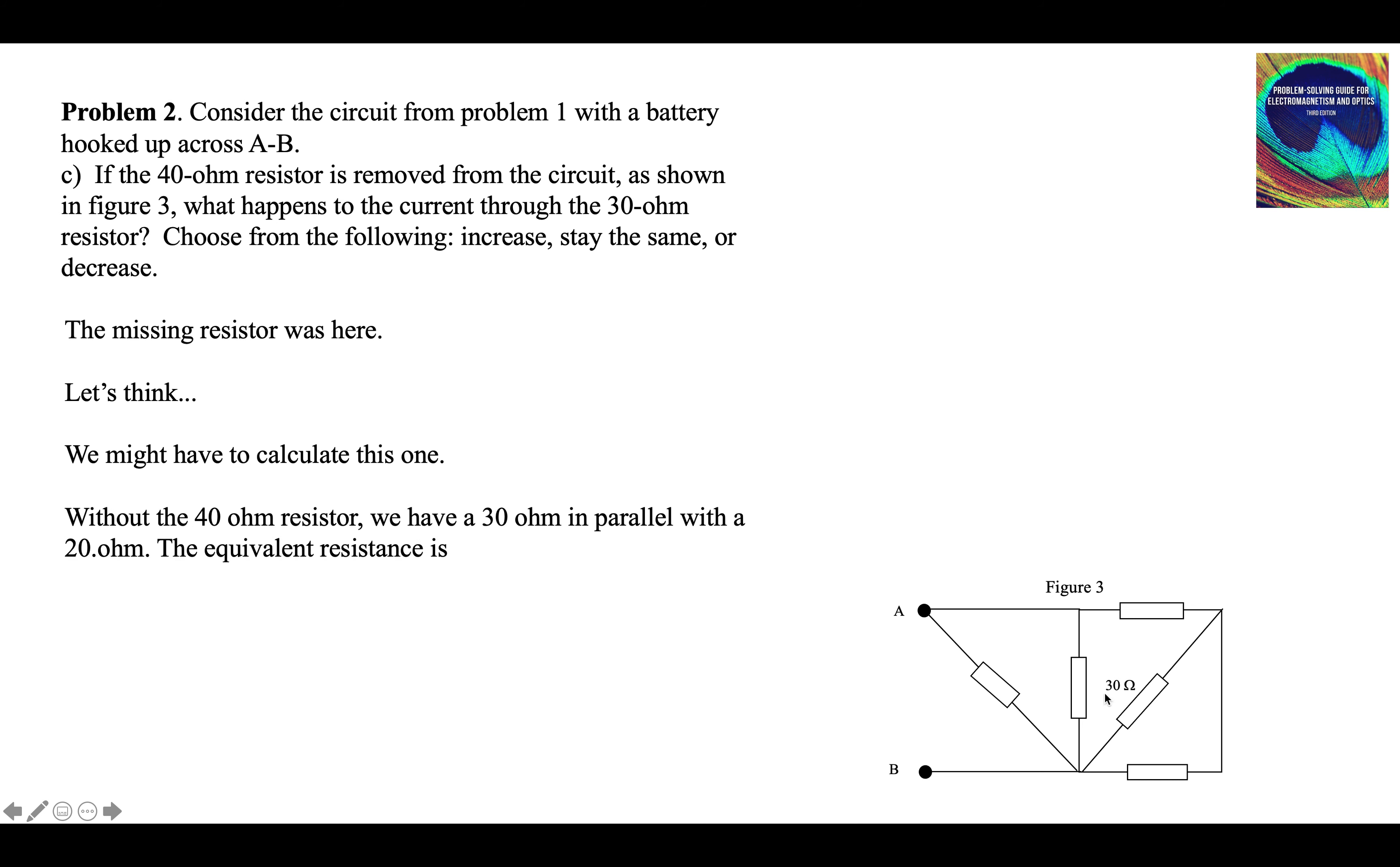So without the 40, we have a 30 in parallel with a 20. So we can calculate the equivalent resistance using the formula for resistors in parallel. And we get 60 ohms over 5, 1 over R equivalent. So the equivalent resistance is 12 ohms. 60 divided by 5. So now we have 12 ohms in series with the 100. That's 112 ohms. Lower resistance.